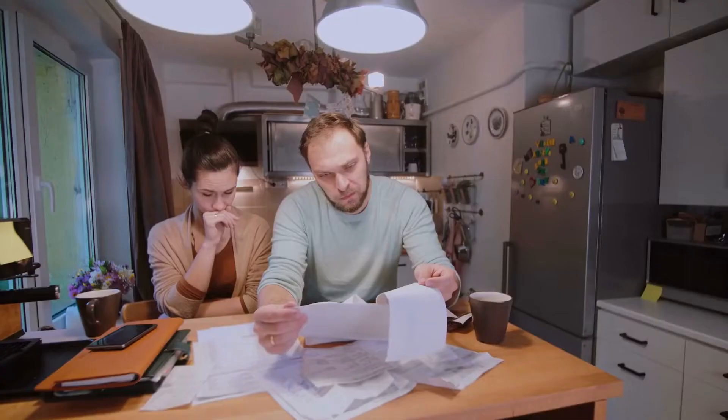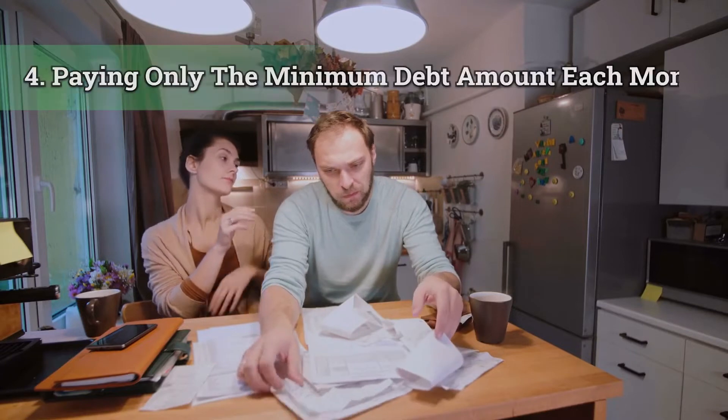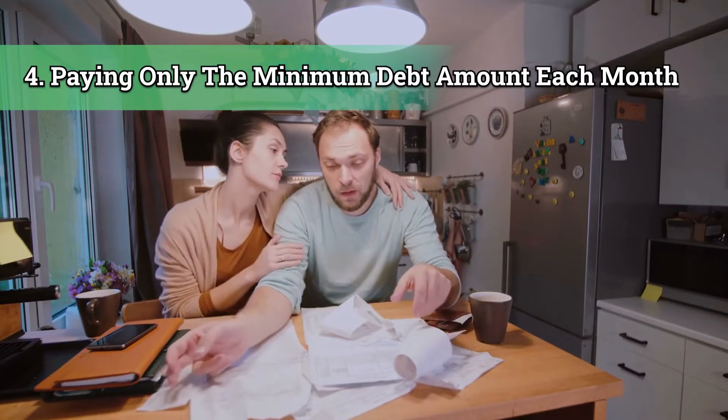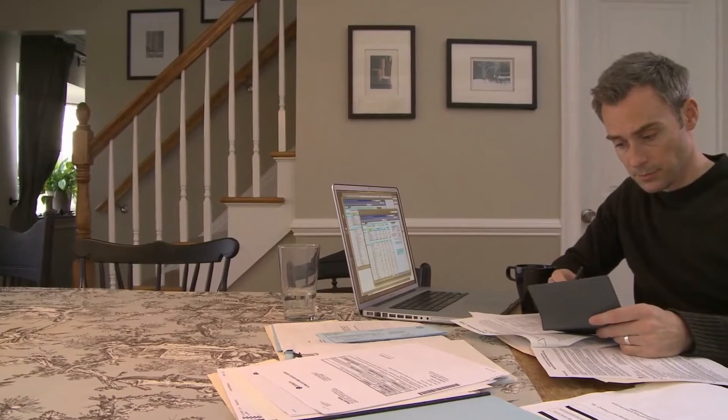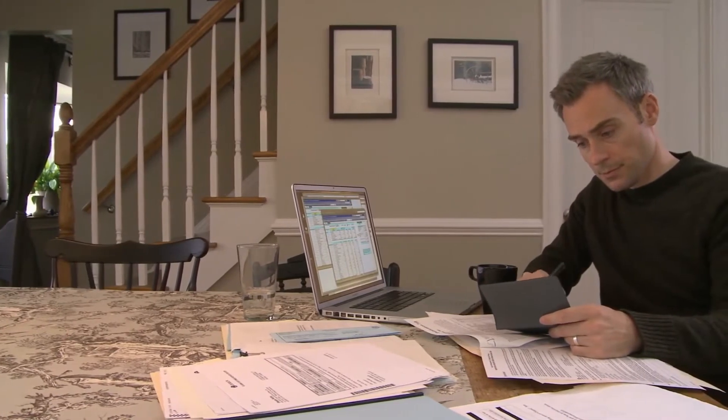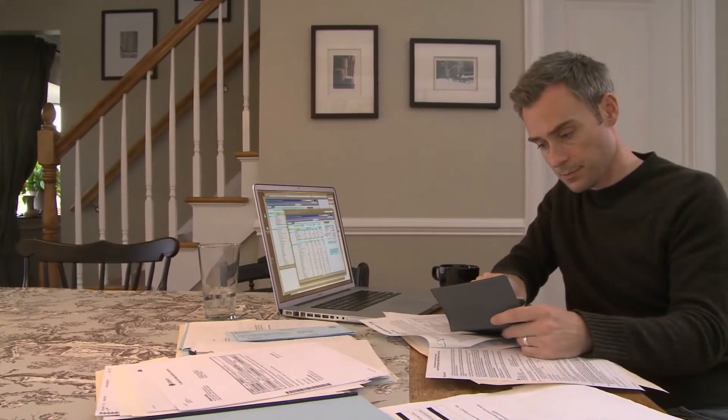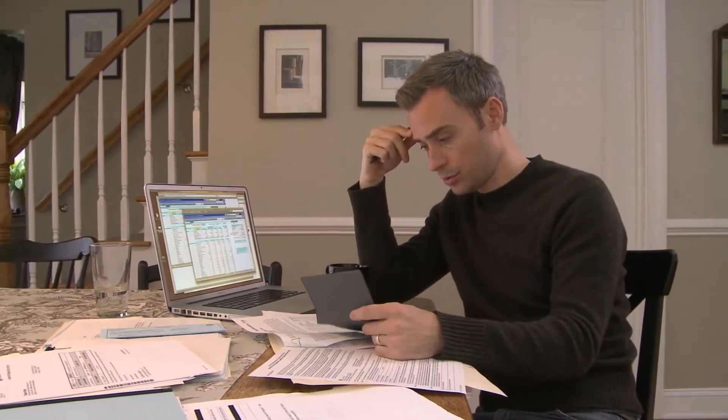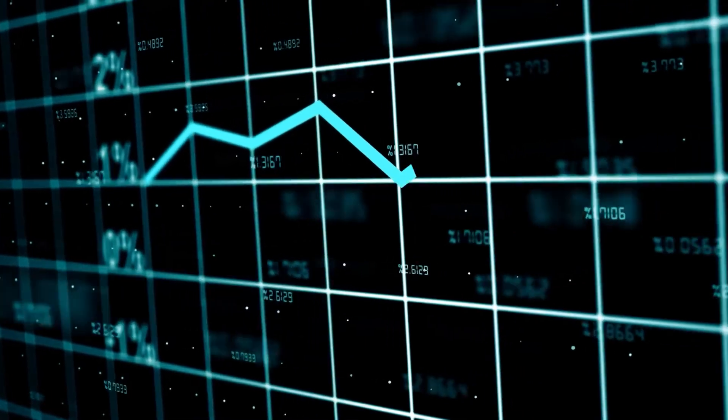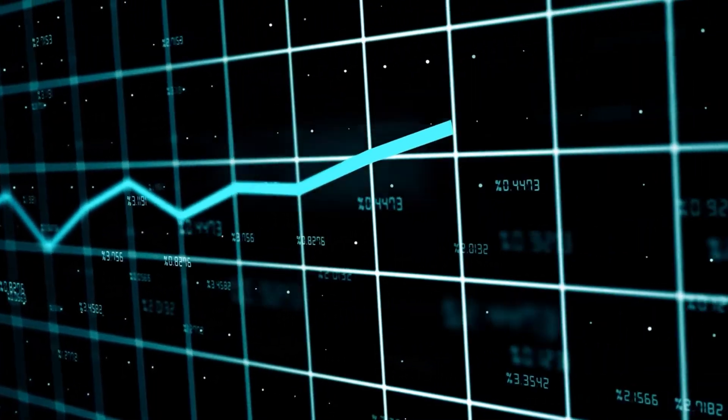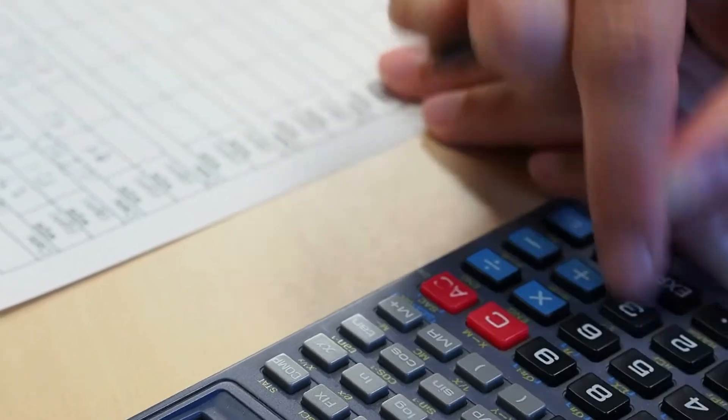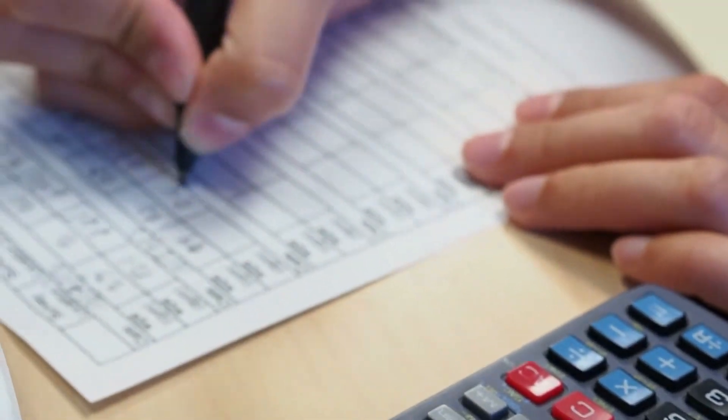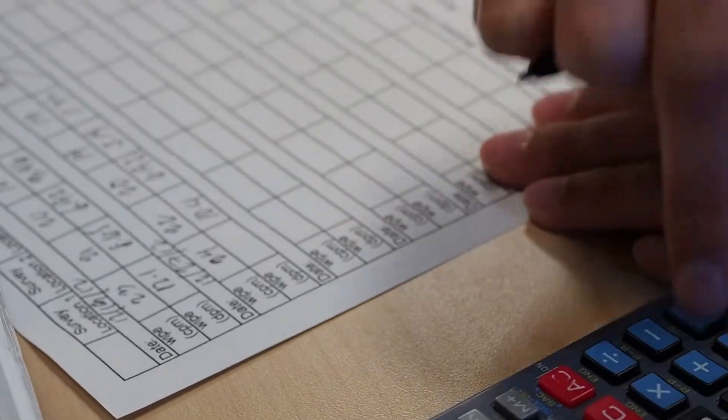Mistake number four: paying only the minimum debt amount each month. Debt can be a difficult thing to face, especially if you're on a low income. You may be tempted to pay the minimum amount each month, but this can cost you more in the long run. Interest charges can quickly add up and you may struggle to keep up with your payments. In addition, making only the minimum payment can damage your credit score, making it difficult to get approved for future loans.